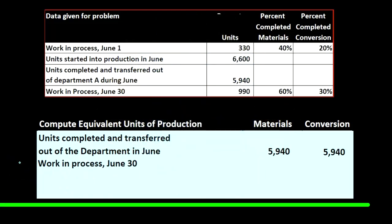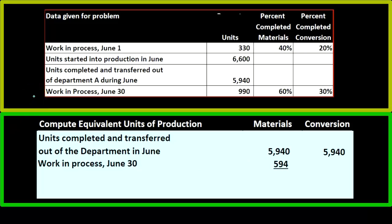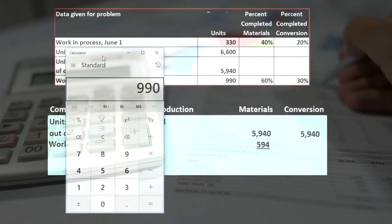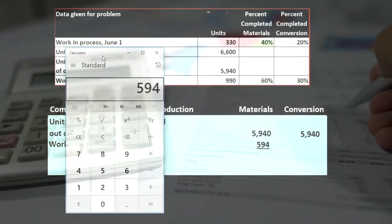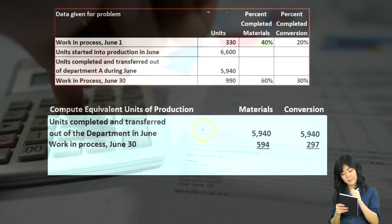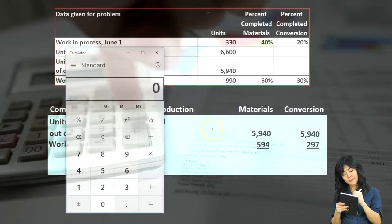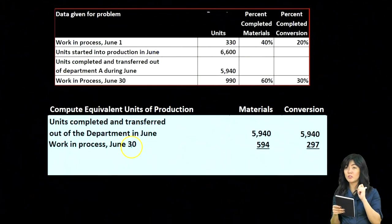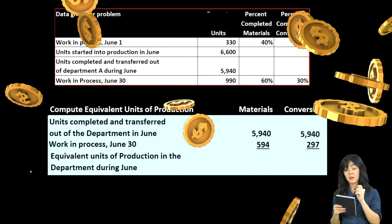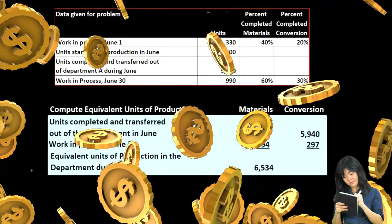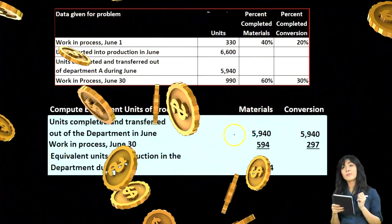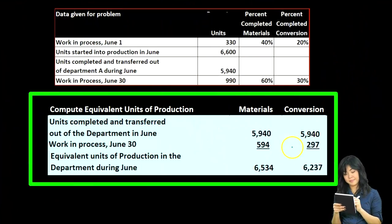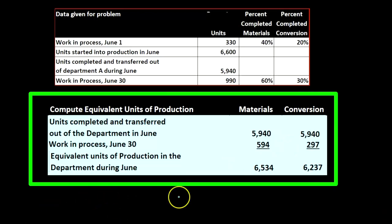Then we have work in process at the end of June. For materials: 990 times 0.6, or 60%, equals 594. For conversion: 990 times 0.3 equals 297. That gives us the equivalent units of production in the department during June: 6,534, which is 5,940 plus 594 for materials, and 6,237, which is 5,940 plus 297 for conversion.